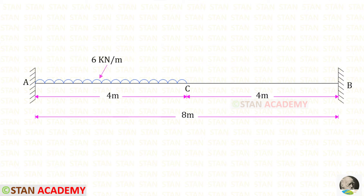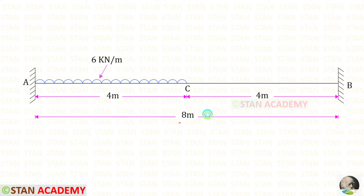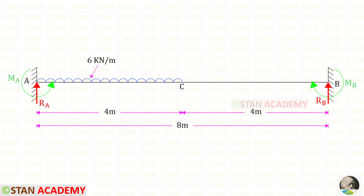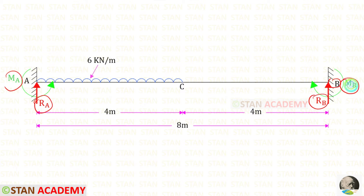In this beam we have a uniformly distributed load of 6 kilo Newton per meter acting in the left half span. The total length of the beam is 8 meters. At point A we have to find the vertical reaction Ra and the moment Ma, and at point B we have to find the vertical reaction Rb and the moment Mb.